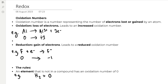Reduction is defined as the gain of electrons, and it leads to a reduced oxidation number. For example, when you reduce fluorine by adding an electron to it to form fluoride ions, the oxidation number goes from zero to minus one.